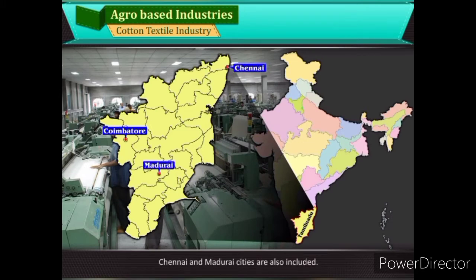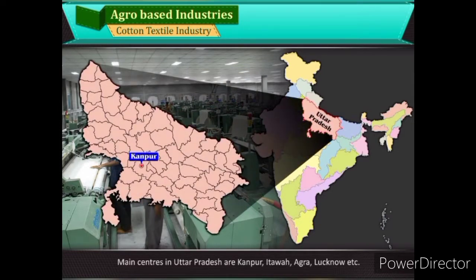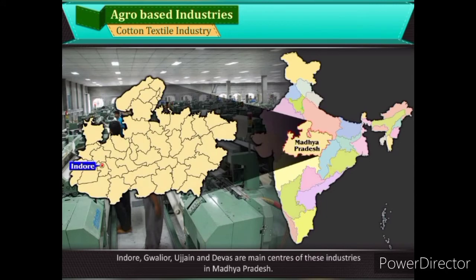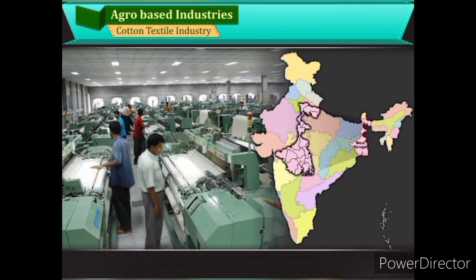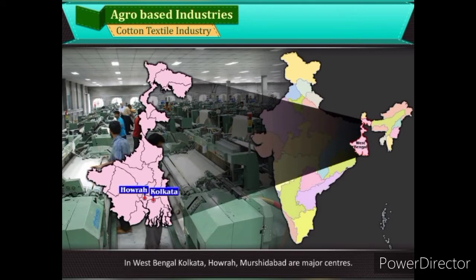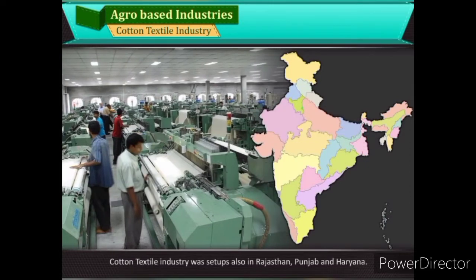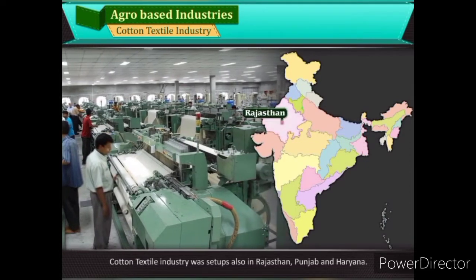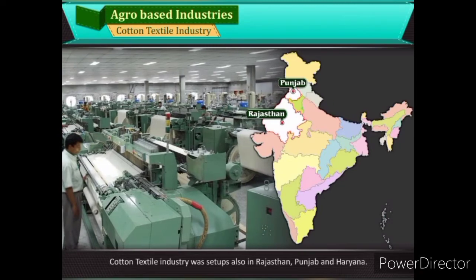Main centres in Uttar Pradesh are Kanpur, Etawah, Agra, Lucknow, etc. Indore, Gwalior, Ujjain, and Devas are main centres in Madhya Pradesh. In West Bengal, Kolkata, Howrah, and Murshidabad are major centres. Cotton textile industry was also set up in Rajasthan, Punjab, and Haryana.